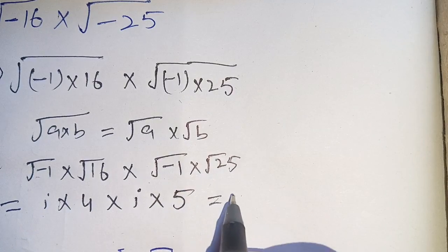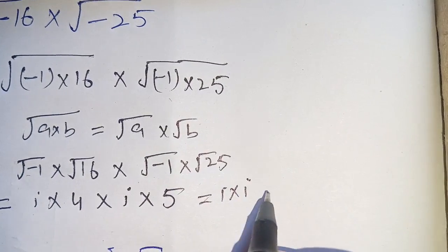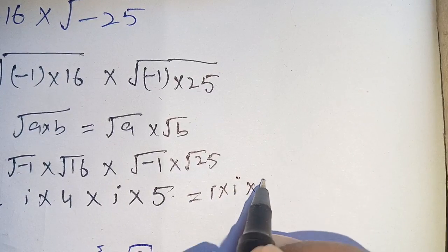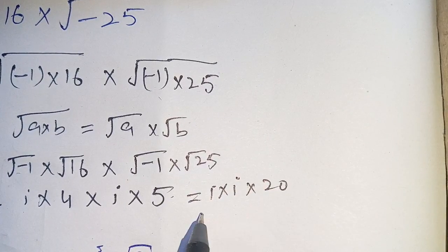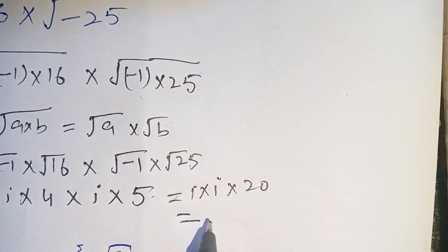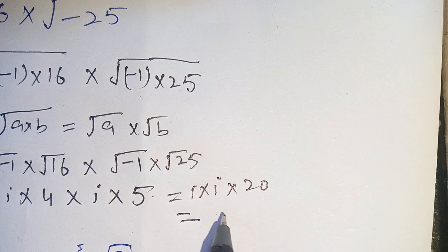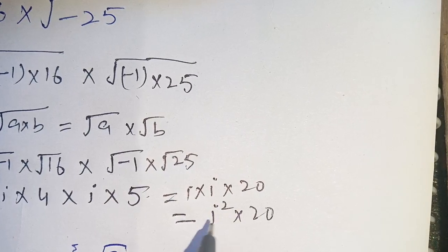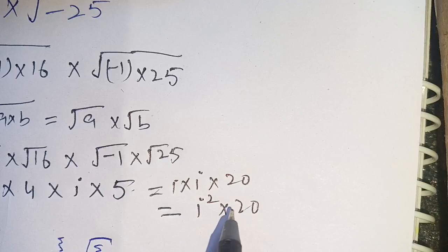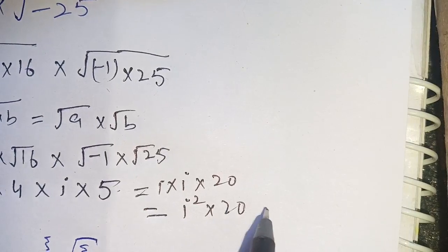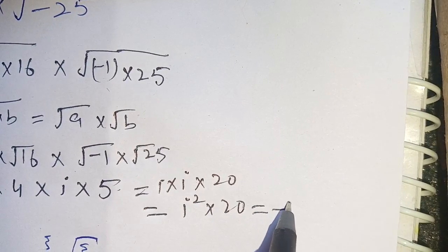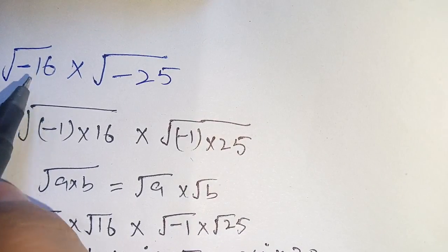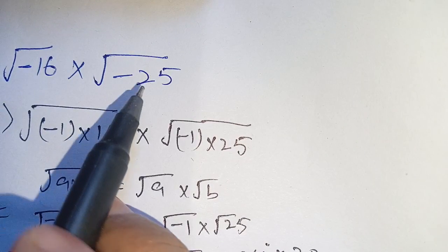This gives us iota times iota times 4 times 5, which equals iota squared times 20. We know that iota squared equals minus 1, so the result is minus 20. Thus, square root of minus 16 times square root of minus 25 equals minus 20.